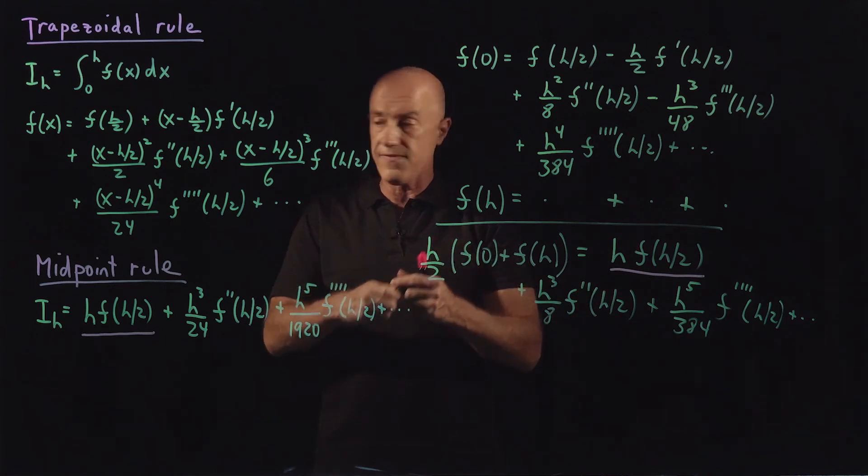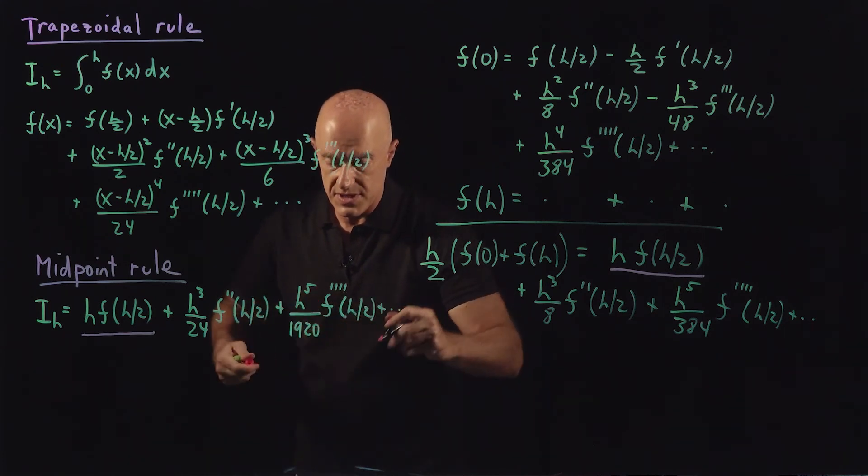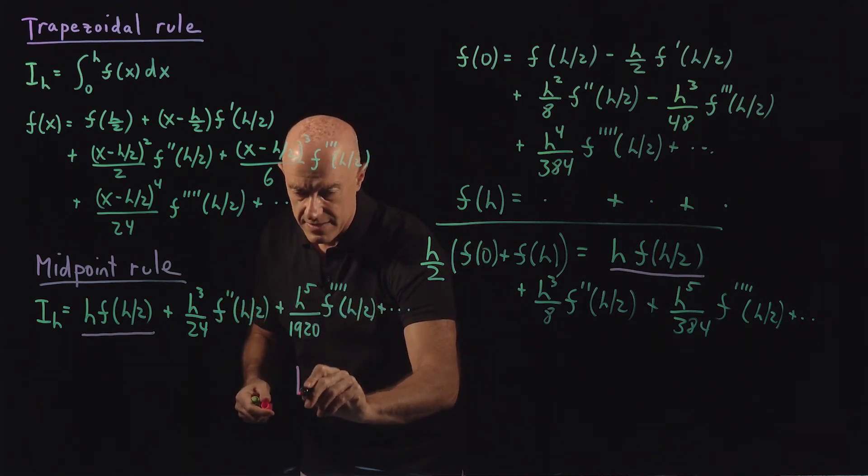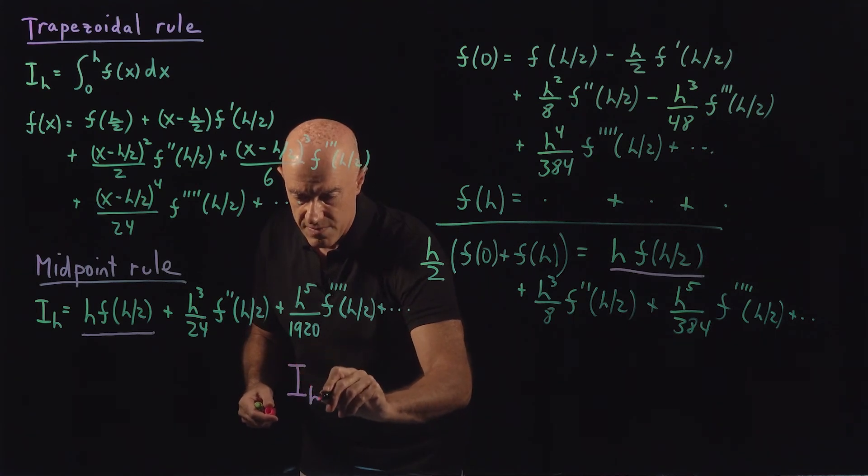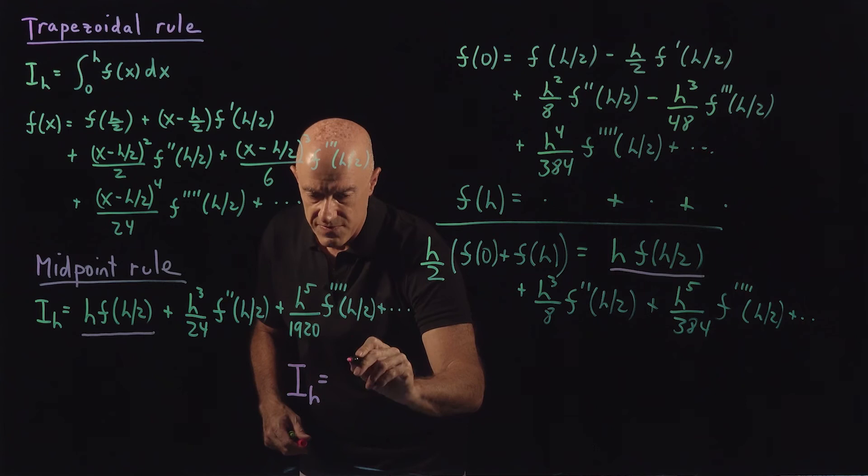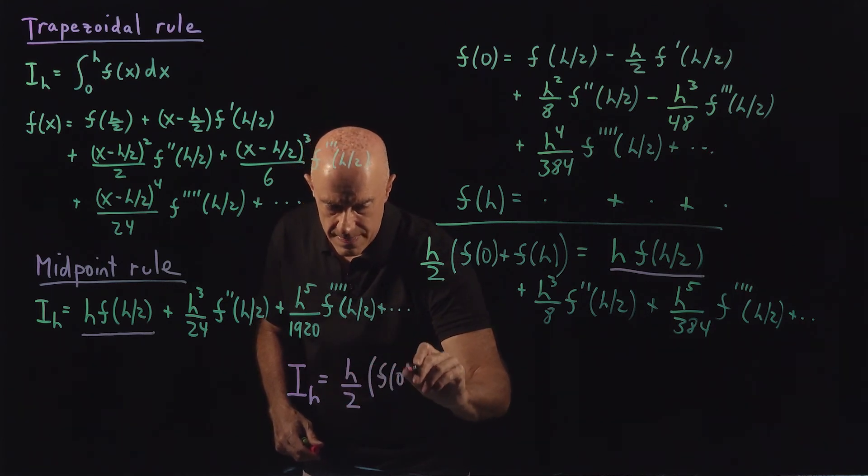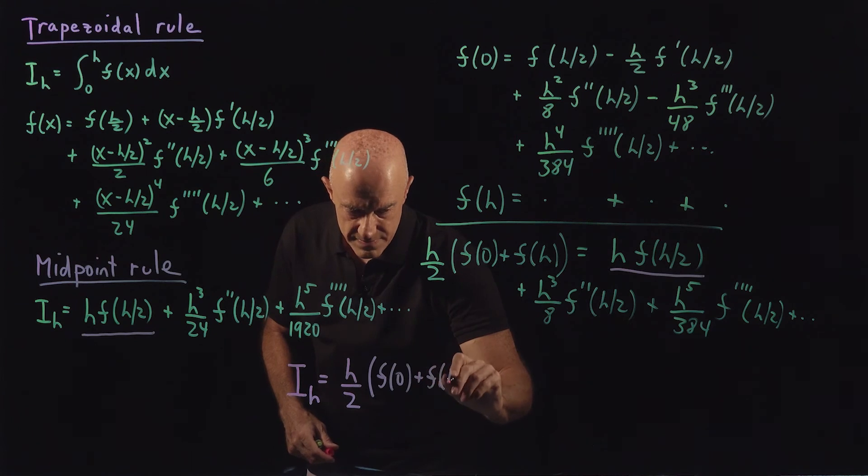And then the final result, which I'll put in this color here, is that our elementary formula for the trapezoidal rule will be h over 2 times f of 0 plus f of h. The average of the value of f at the two endpoints of the interval.